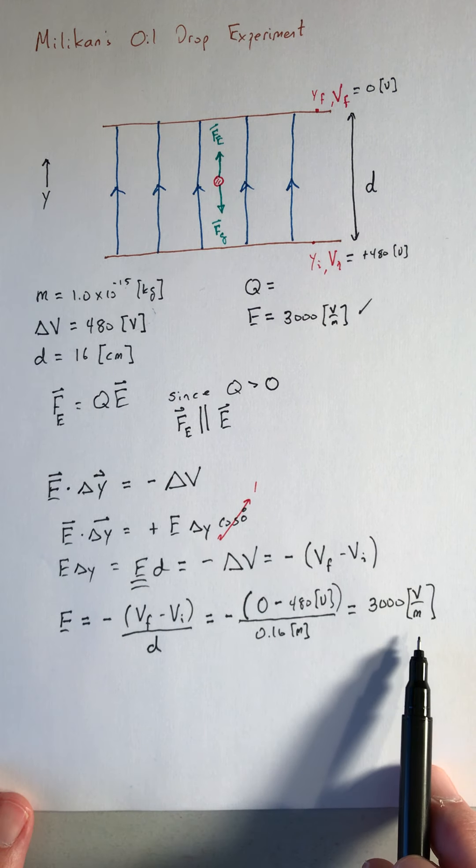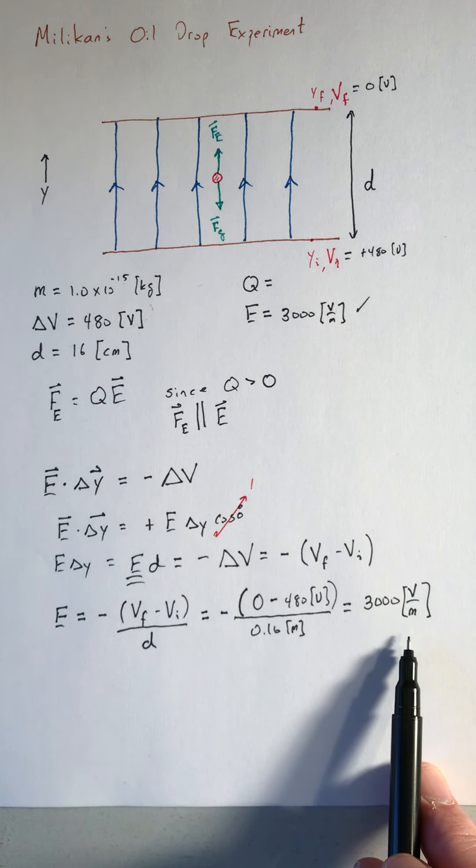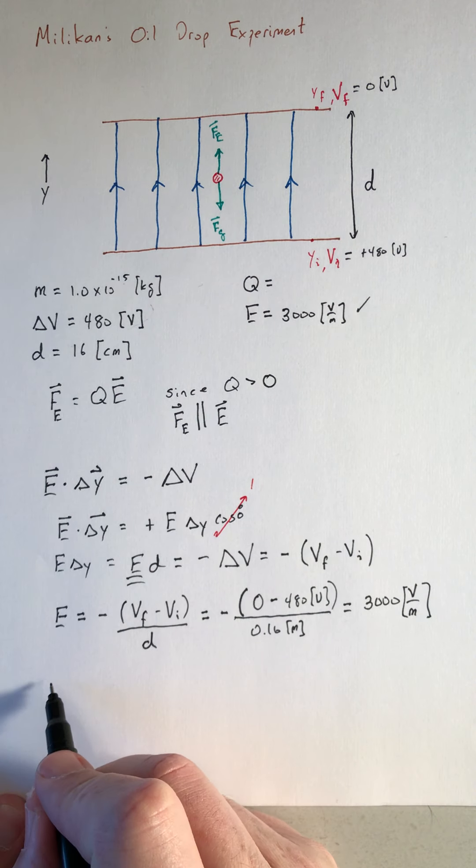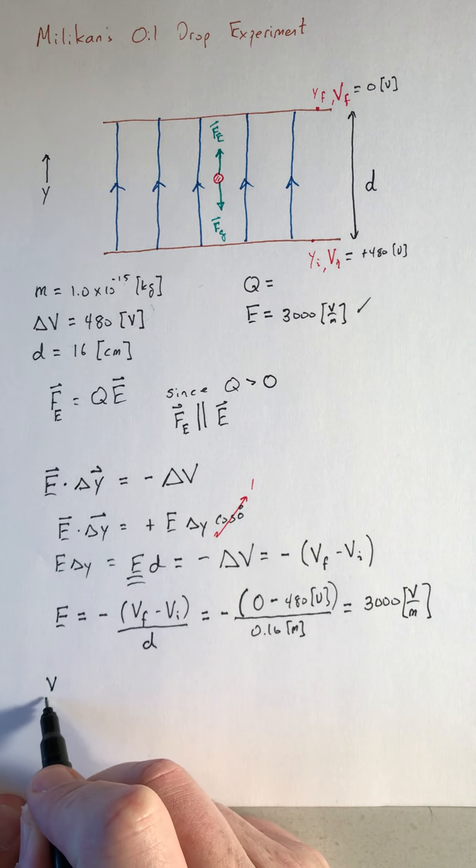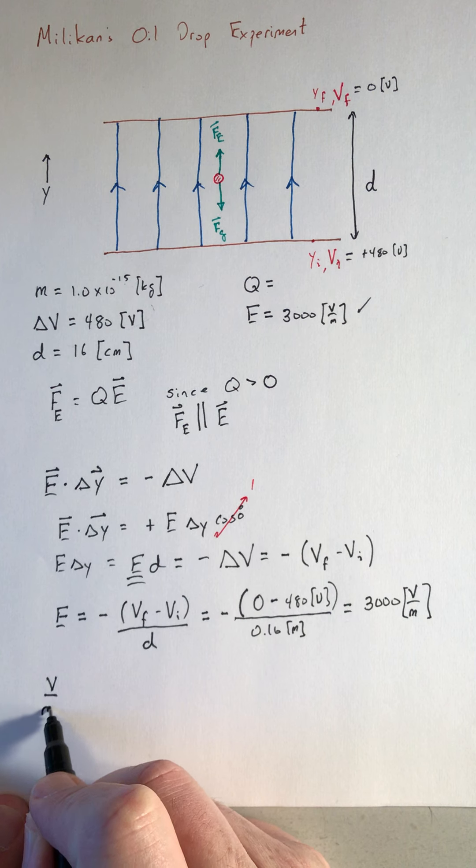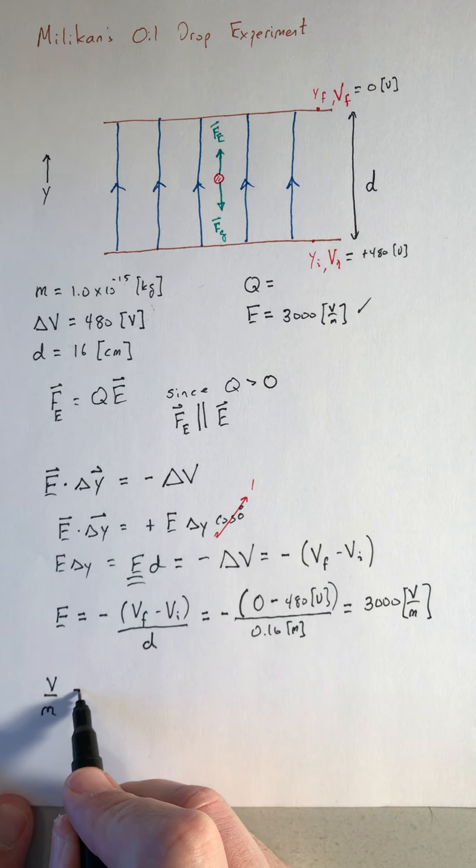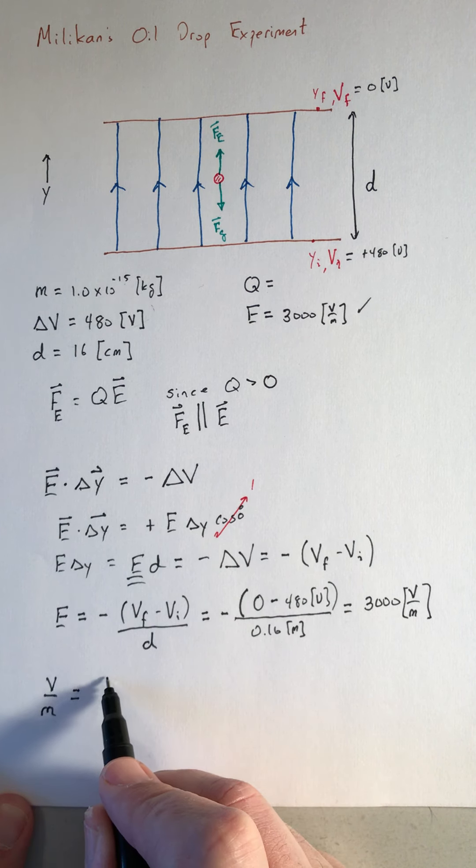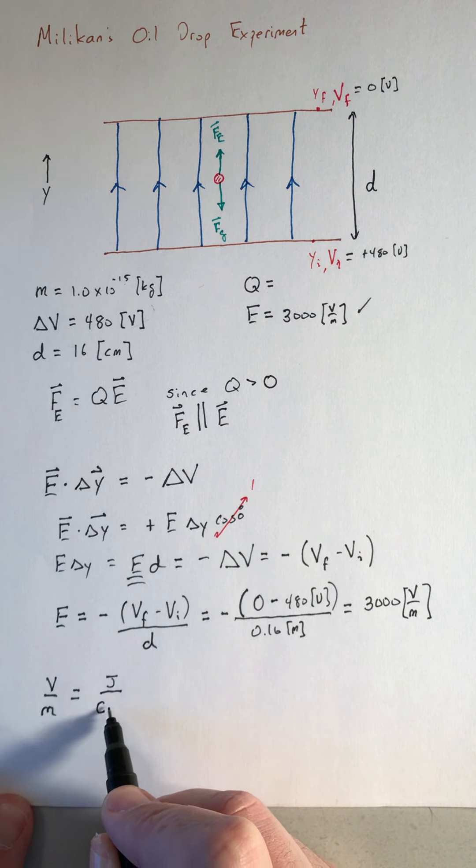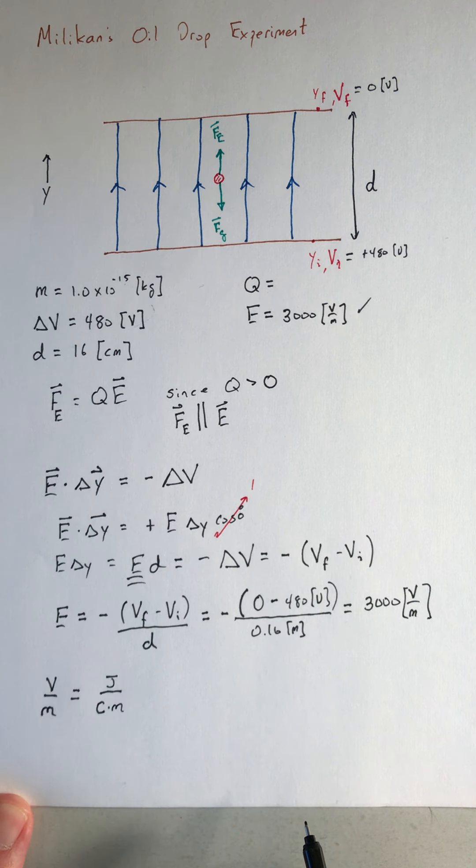Now, this is a unit for the electric field we haven't really seen before. So let me go through and show you that this isn't really any different than what we had previously. So I have a volt per meter. A volt is a joule per coulomb. And then I still have the meter in the denominator.